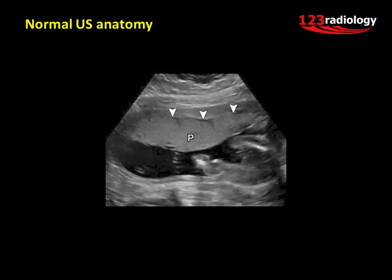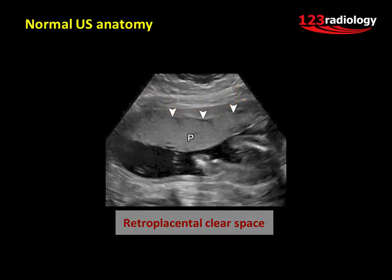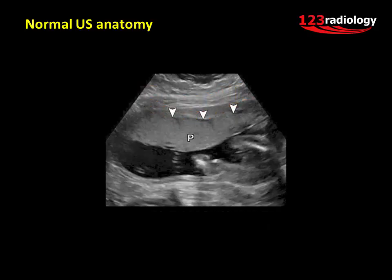The normal placenta on ultrasound appears as a uniformly echogenic structure along the uterine wall, with a deep hypoechoic band separating it from the normal uterine myometrium. This retroplacental hypoechoic band is vital to rule out implantation disorders, and its normal appearance should not be confused with retroplacental hematoma.